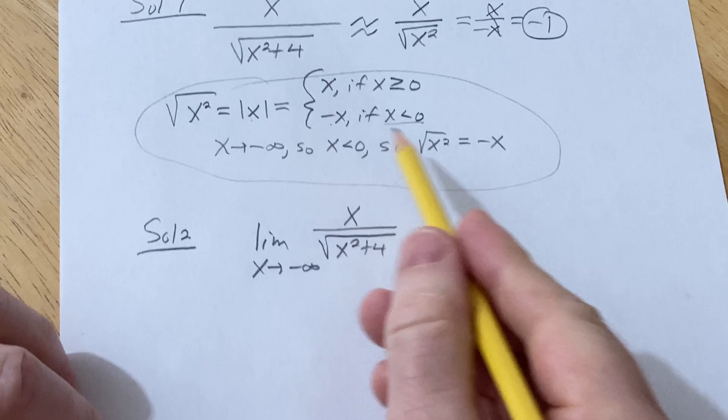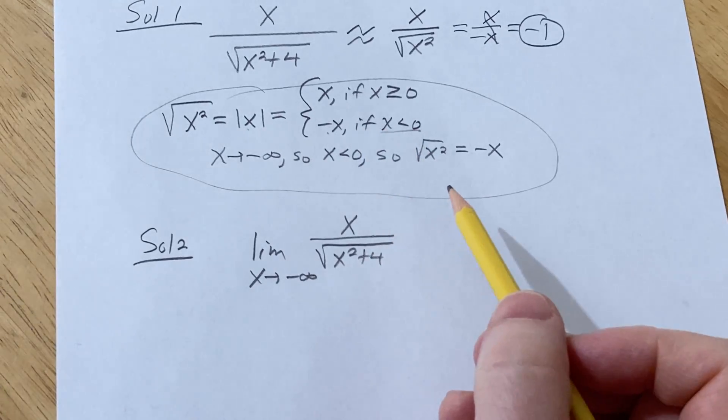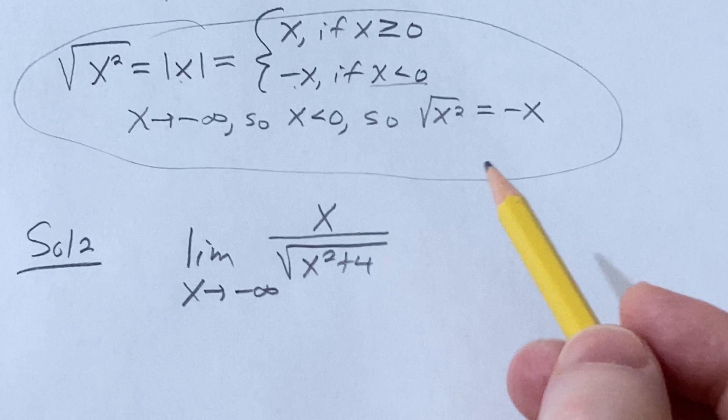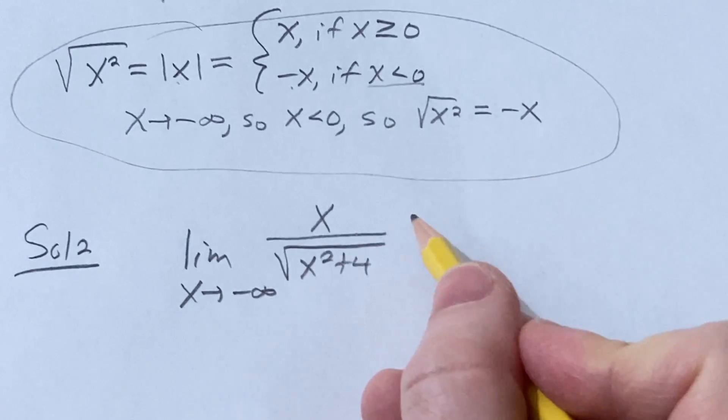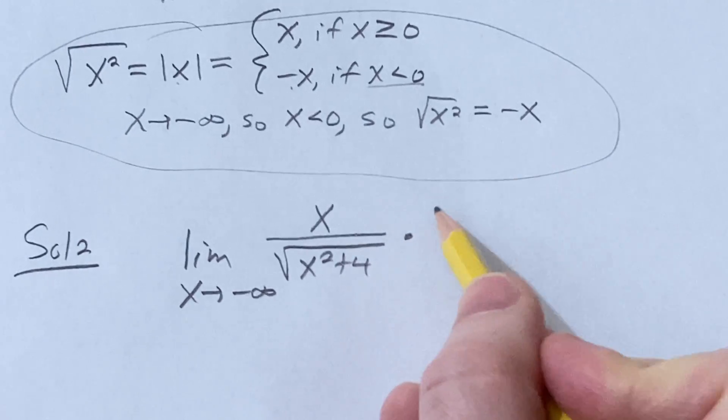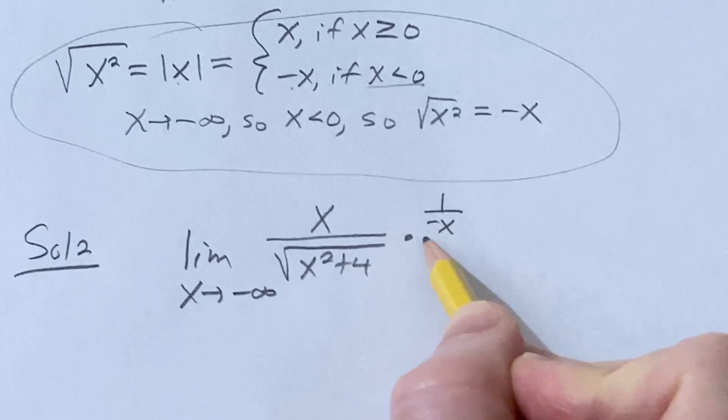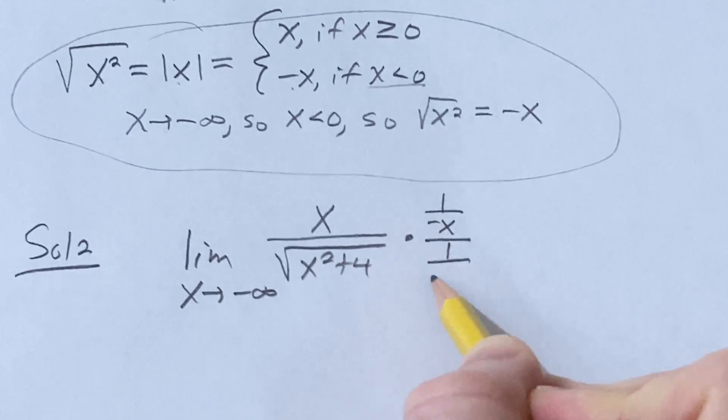So we can do this using this same idea, but we can be a little bit more precise with our work here. So what we're going to do now is we're going to basically multiply by 1 in a clever way. So here I'm going to multiply by 1 over negative x, and then here I'm going to multiply by 1 over the square root of x squared.